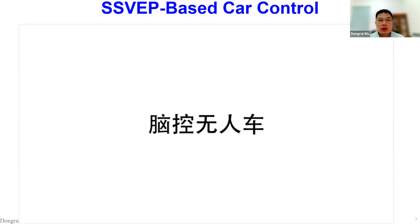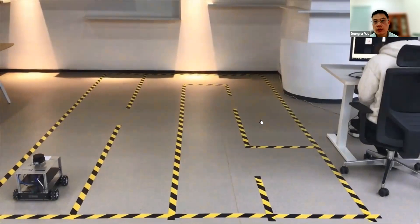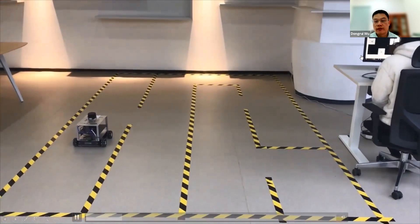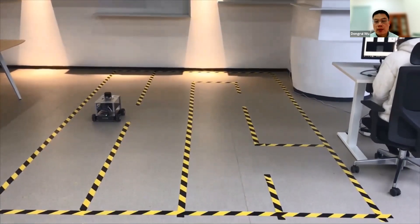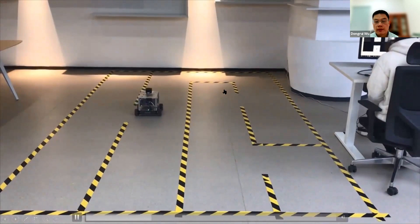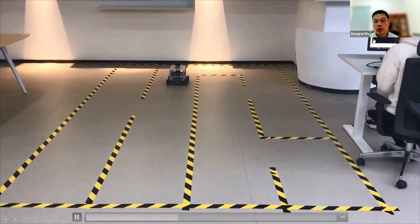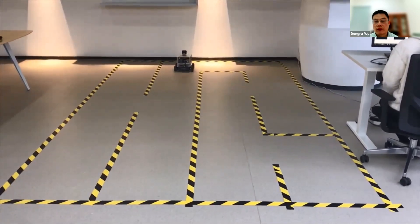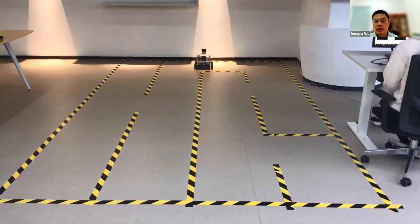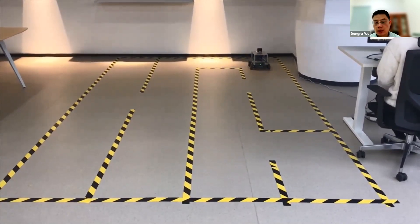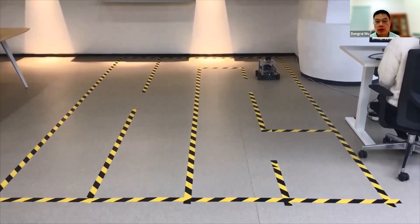Here is a demo of SSVEP-based car control from our lab. My student is looking at a screen with five different commands flashing at different frequencies. According to the command she wants to send to the car, she looks at the corresponding square. Then we detect the EEG frequency and send the corresponding command to the car so that it can navigate through a maze. This is a simple demo of SSVEP-based interfaces.